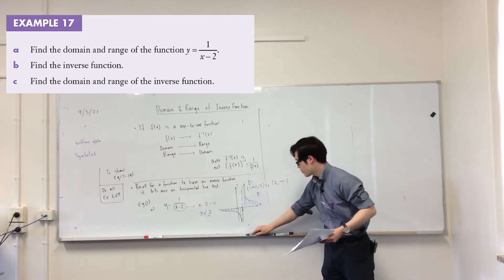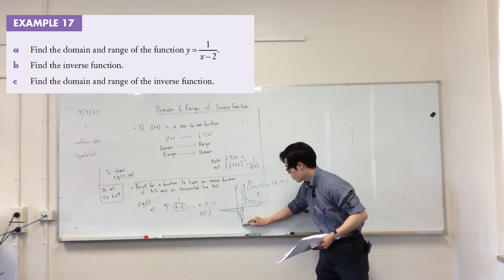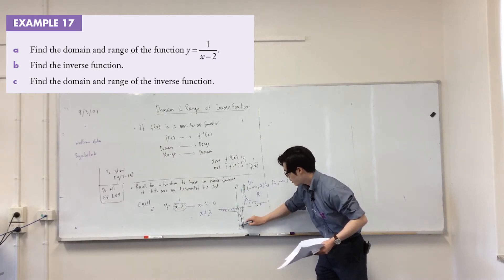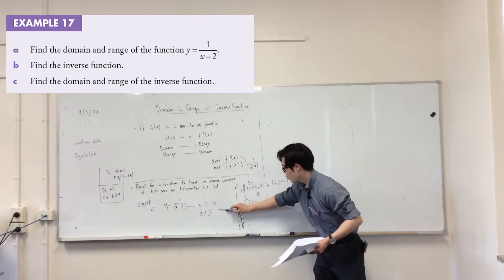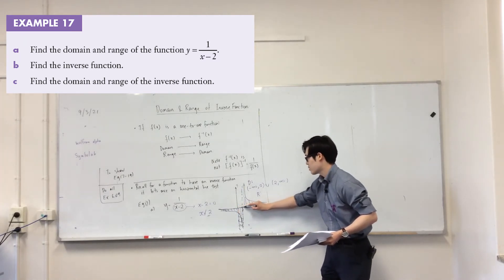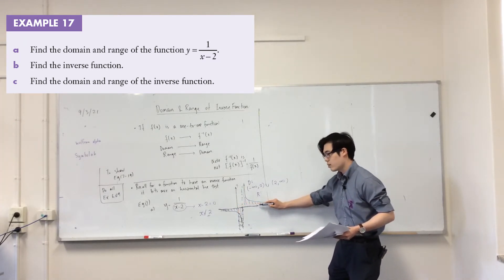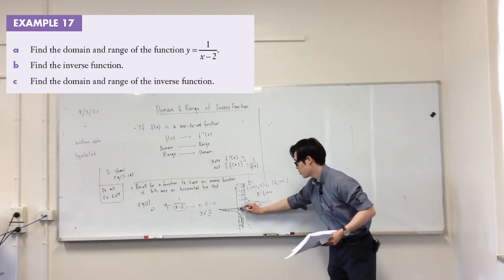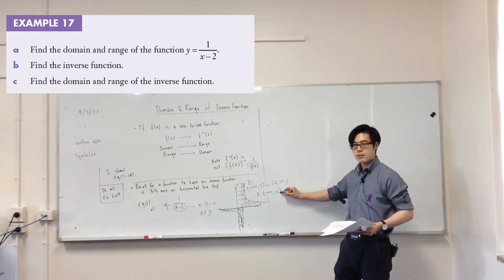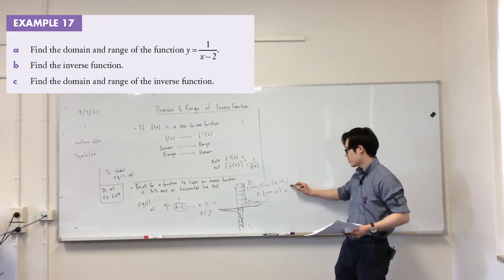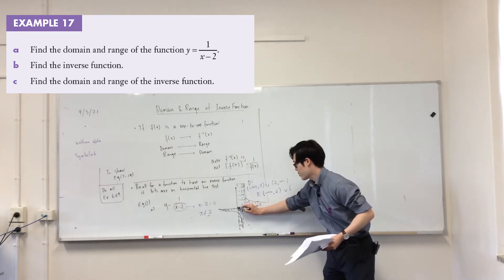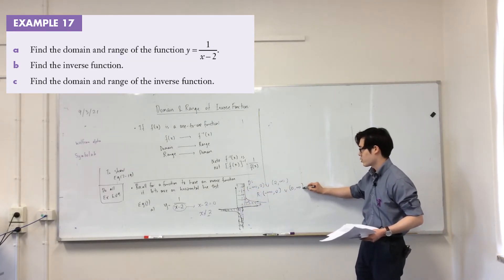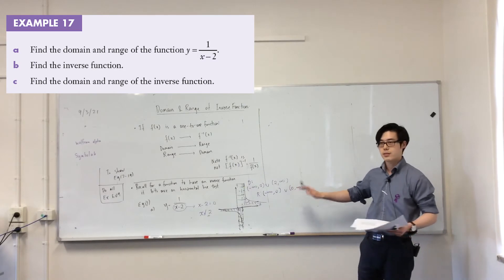For the range, we're looking at all the y values. It can take all the y values except — can you see that the graph never touches 0? So it can take all the negative values up until 0, and in union with, starting from 0 but not including 0, it can take every single positive y value going up. It's just revision.